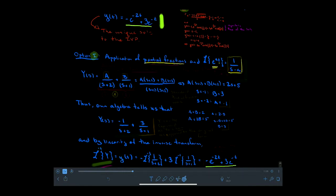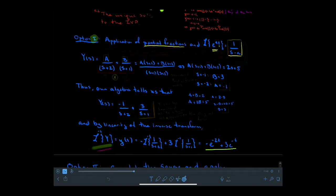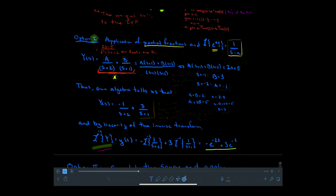Why would we want to do that? We know there are exponential functions in the time domain that solve this problem, but we want to see the problem with our Laplace eyes — we need to understand what these exponential functions look like in the Laplace domain. Capital Y of S was found to equal 2S plus 5 over S squared plus 3S plus 2. The roots of this quadratic are the rates in the exponential function, so I need to look for those rates as linear terms in S in the denominator of Y of S.